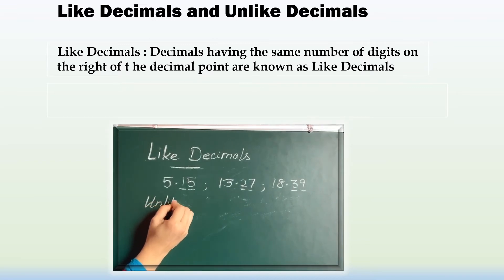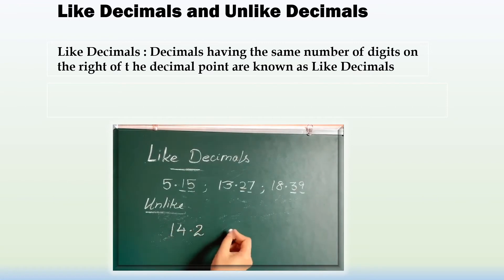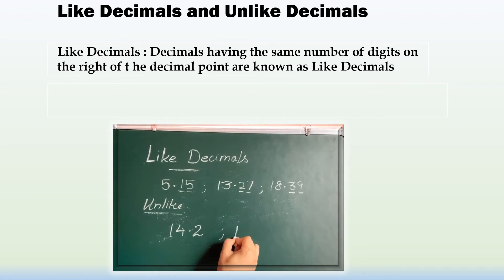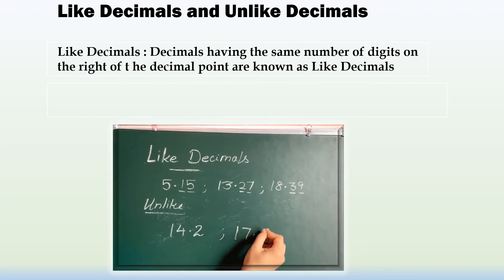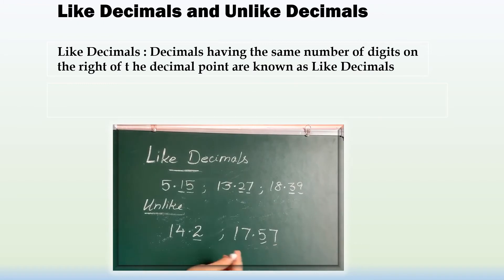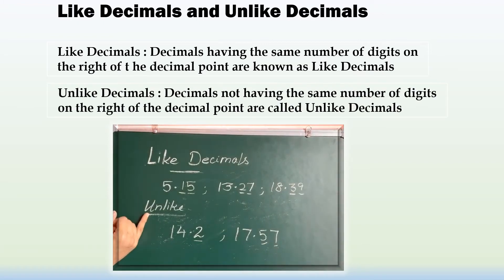Unlike decimals: if the number of decimal places is different, then it is called unlike decimals. Here you can see one number has 1 decimal place and another has 2 decimal places. Since the number of decimal places in these two numbers is different, they are called unlike decimals.